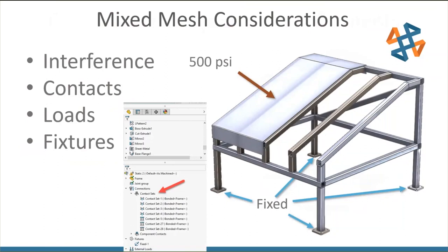Even though beam nodes are along the center, if a beam runs through a solid component you'll have virtual interference. The other thing to keep in mind is contacts — how the parts interact with each other. Between a beam and a shell, or a beam and a solid, you have to define those contacts, otherwise the parts won't see each other. Assign your loads accordingly: for beams, loads go to the joints or the entire beam; for shells and sheet metal, loads go to the sheet metal component; and the same for fixtures.